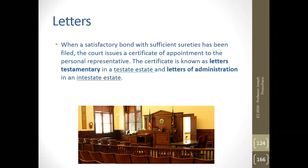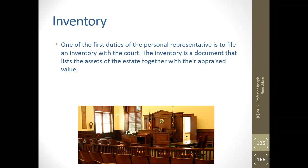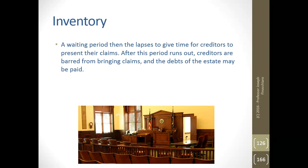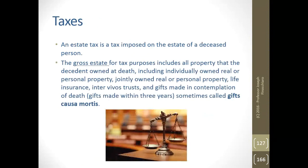After a waiting period, a hearing is held to decide on the petition and the court issues a decree or judgment allowing or disallowing the will and appointing the executor or administrator. The personal representative — also called a fiduciary — must file a bond with the court before being appointed. The amount of the bond is usually twice the value of the personal property of the estate. When a satisfactory bond with sufficient sureties has been filed, the court issues a certificate of appointment known as letters testamentary in a testate estate and letters of administration in an intestate estate. One of the first duties of the representative is to file an inventory listing the assets of the estate together with their appraised value. A waiting period then occurs giving creditors time to present claims.